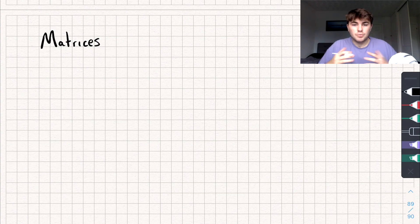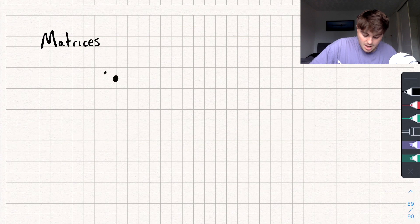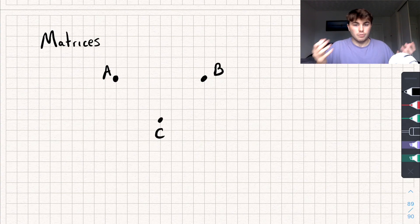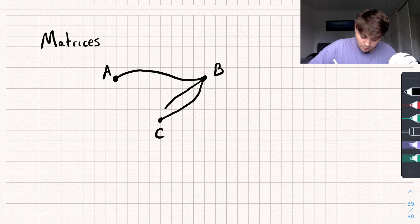So if you haven't seen matrices before, we'll introduce them like this. Say we have three towns, town A, we've got town B, and say another town that I will call C. And let's connect these towns together with routes, so like there to there, and let's give two routes that take you from B to C.